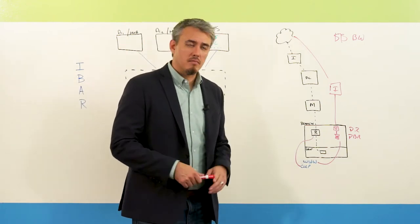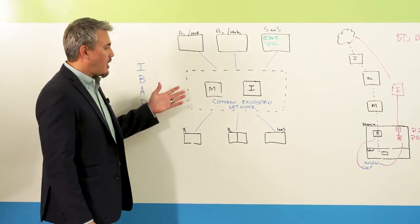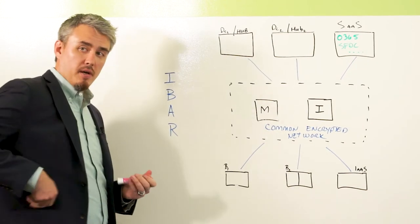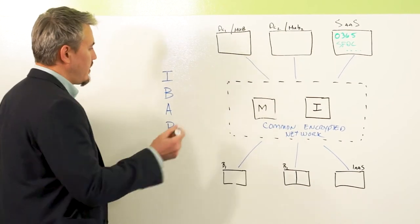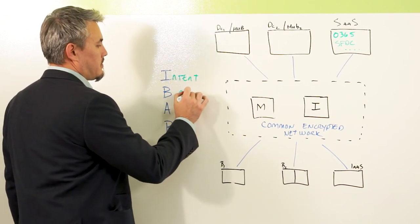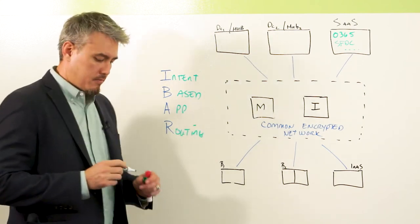Why do you want SD-WAN? Because it makes it simpler. The first thing it does is give you a common encrypted network. And this common encrypted network is an intent-based application routing architecture.